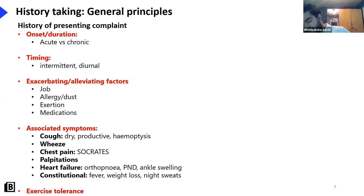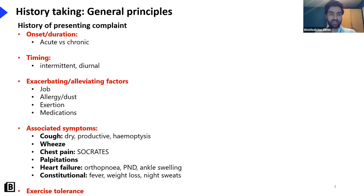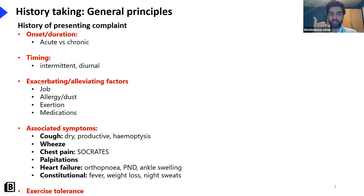Diurnal means it's worse in the morning and at night — what's that classical diurnal shortness of breath? Asthma. For those of you who have asthma or have studied asthma, you'll know the shortness of breath is worse in the morning and worse at night. Patients are often coughing throughout the night and wake up breathless — that's classic of asthma, and it's reflected in the peak flow, which will be worse in the morning and worse at night.